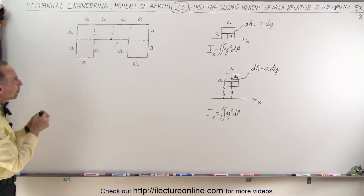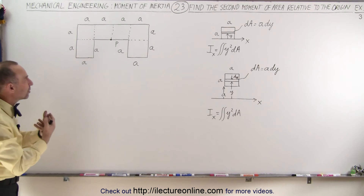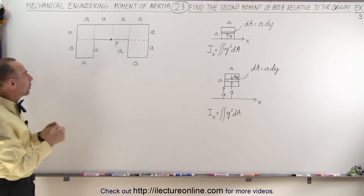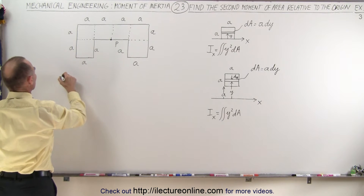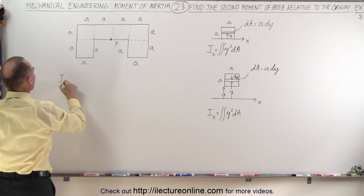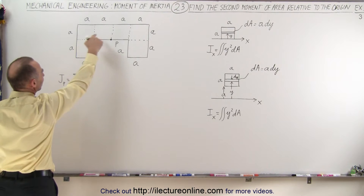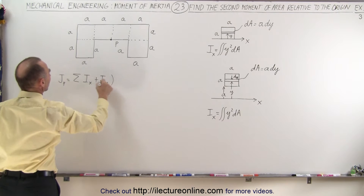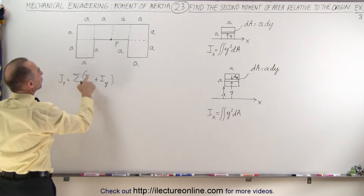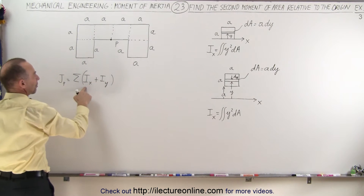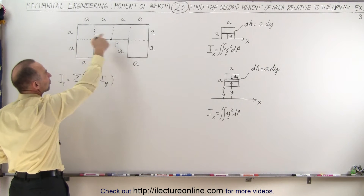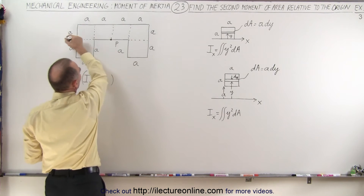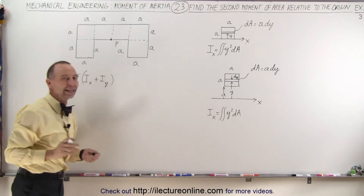To find the moment of area with respect to P, it's like finding the second moment of area with respect to the origin if you were to place the origin there. What we're going to do is realize that the second moment of area with respect to P equals the sum of all the various pieces — that is, I sub x plus I sub y. In other words, we find the second moment of area with respect to x and with respect to y for each of these six areas.